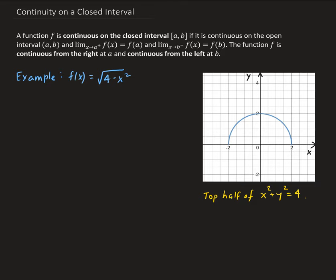I'm going to take the limit as x approaches 2 from the left. So we have the limit of square root of (4 minus x squared) as x approaches 2 from the left. As x approaches 2, the y value is getting closer and closer to 0. When we plug in 2, we can see that we get 0, as expected.